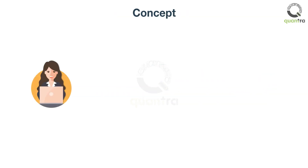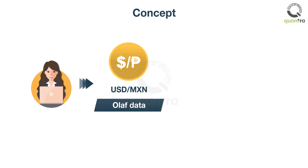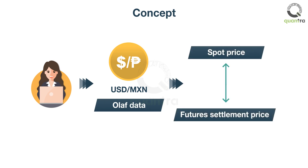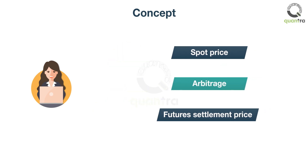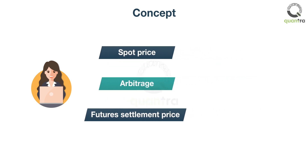Anna has a very simple strategy for the USD-MXN futures. In the historical OHLC data, she has found a difference between the spot price and the futures settlement price, which results in a good arbitrage opportunity. For example, consider a hypothetical commodity with the spot price at $100 and the futures settlement price at $105, and the futures will expire the next day.